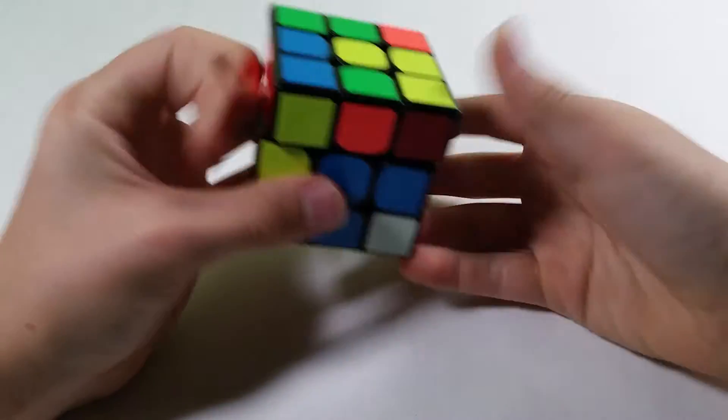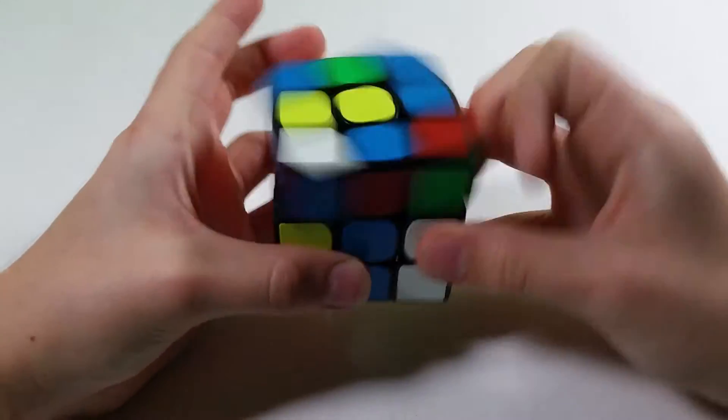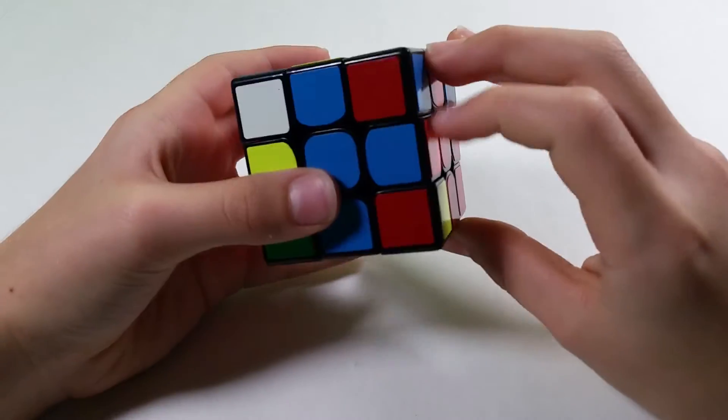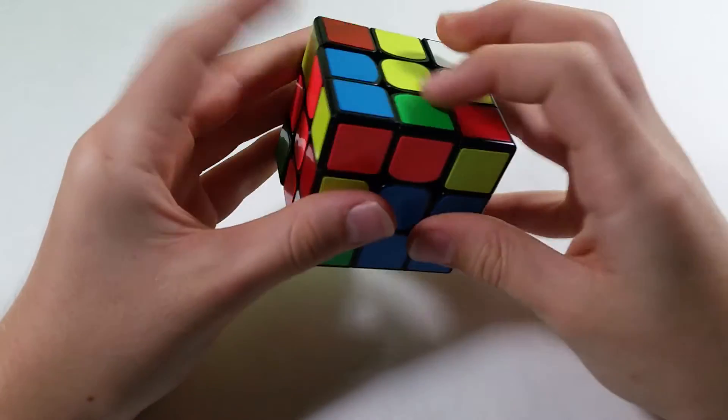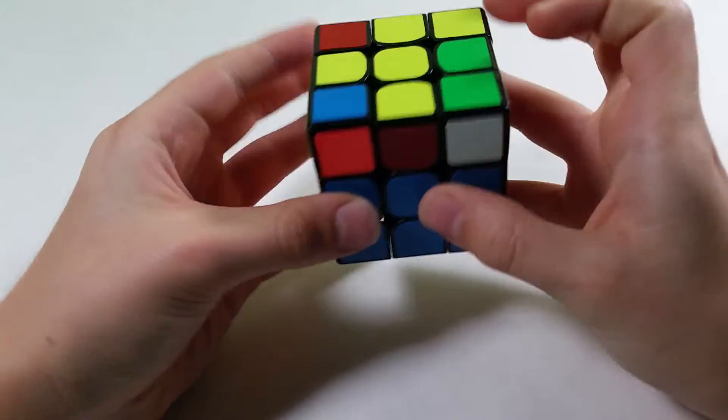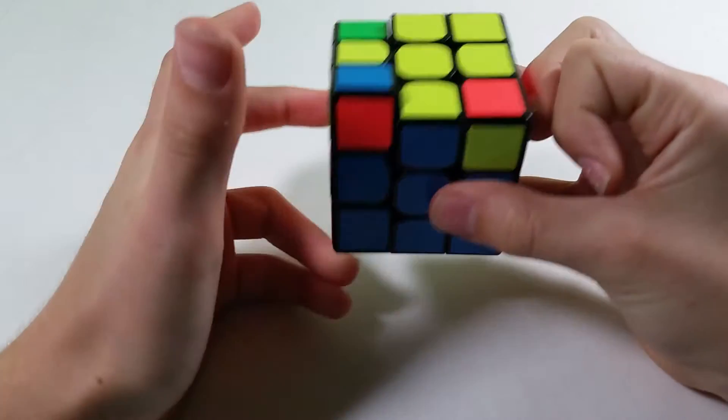First pair is already made, solve it like that. These two, R U' to take them out, and then R U2, R', U' sets them up. These two here, and then these two, I just insert like that.